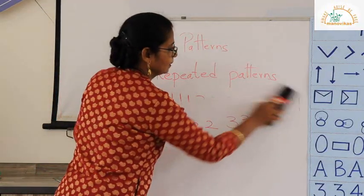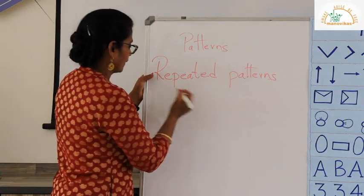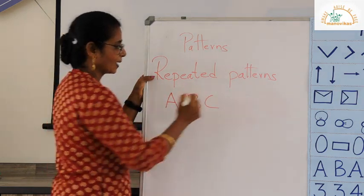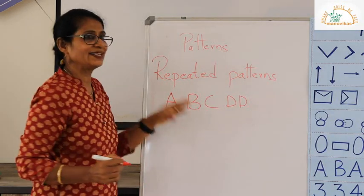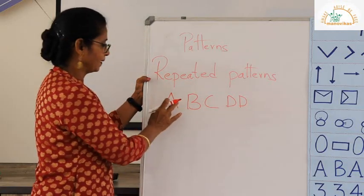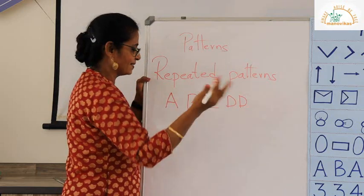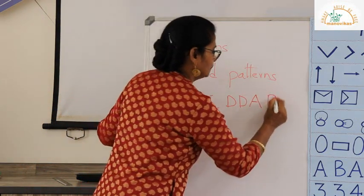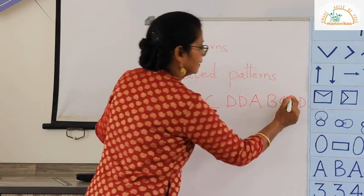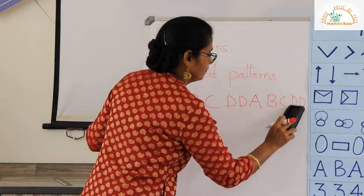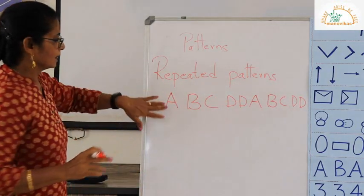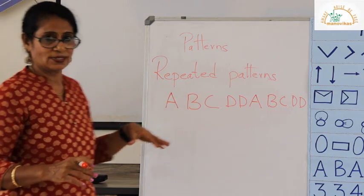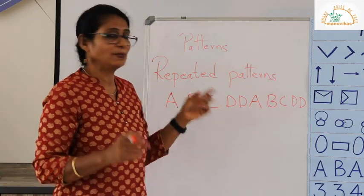Let us do this repeated pattern using alphabets. Suppose I have A, B, and C. I have the letter D repeated two times. So my pattern is A, B, C, and repeated D. My next letter will not be E but I will have to write A. So A, B, C, and I have to repeat the letter D. I have to have the same pattern repeated. Only then we say it is a repeated pattern, because the repeated pattern uses shapes or geometrical shapes but they are repeated.